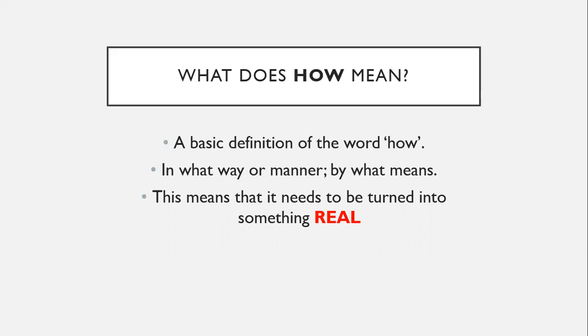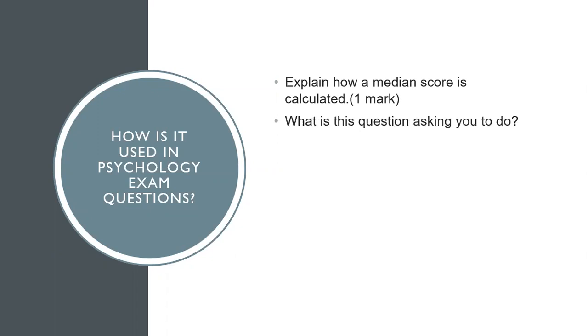Okay, I know I've cheated a little bit and I haven't started the 60 seconds but I want to just focus on two very basic questions that use the word how. So I'm starting the clock and here it goes. How is it used in exam questions? A very simple way that you can see it, explain how. The median score is calculated one mark. Now we've got two command words, explain how. What would you actually do? That's what the question's asking you.